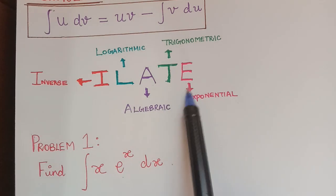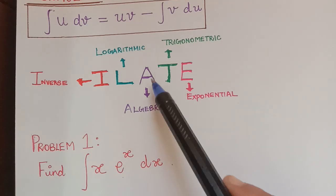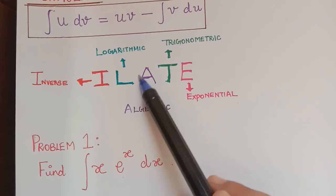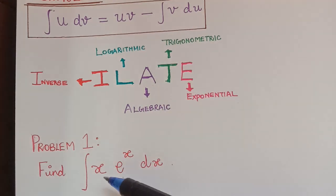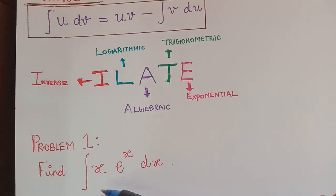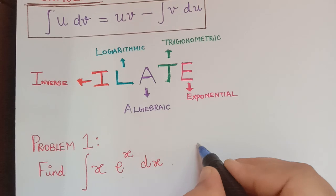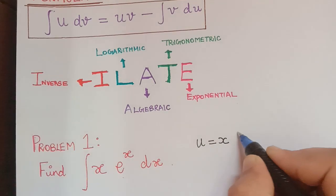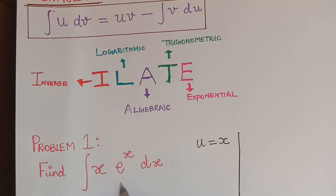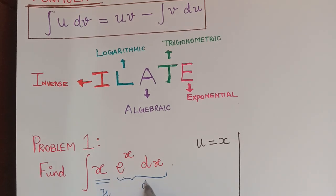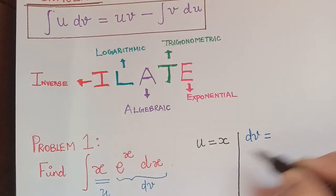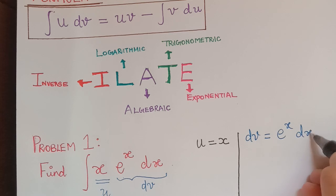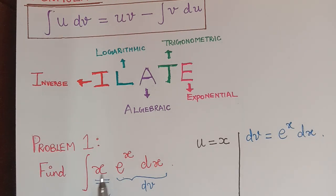Since we have to choose u in the ILATE order, algebraic comes before exponential. Therefore u should be x. So u = x, and the remaining part will be dv — that is, dv = eˣ dx. This is how we choose the function u: follow the ILATE order, and the remaining functions are taken as dv.